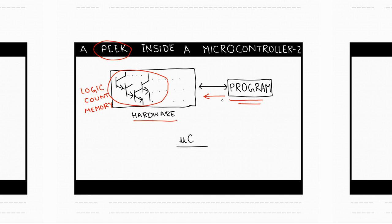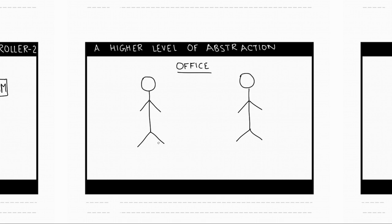In this video we are going to see a higher level of abstraction in a microcontroller to see what is inside it. At a higher level of abstraction, I would like you to visualize a microcontroller as a small office with one employee and one boss. Let's call this office the MUC office.